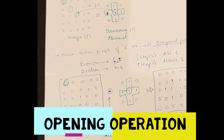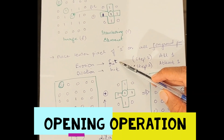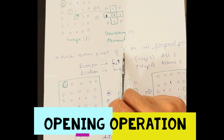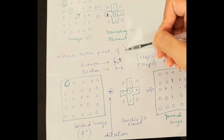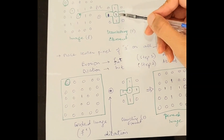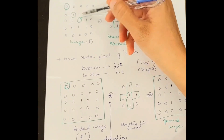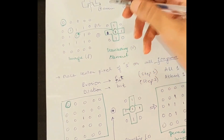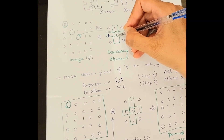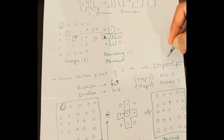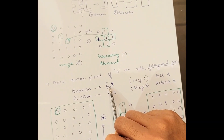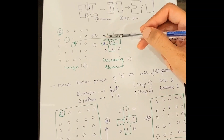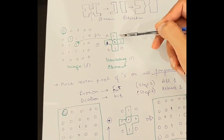In step one we are going to perform erosion. When performing erosion, keep in mind that you have to do a fit operation. The fit operation means that when you place the center pixel of the structuring element on your foreground pixels — the ones representing the foreground — erosion requires that all the ones of the structuring element should match with the ones of the image. The zeros in the image are background pixels.